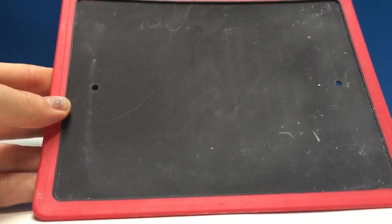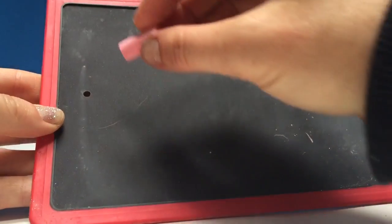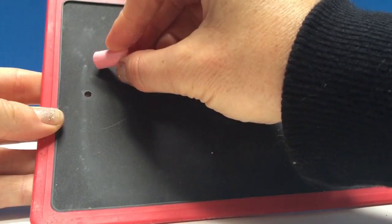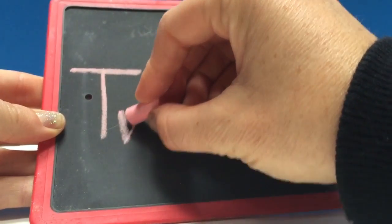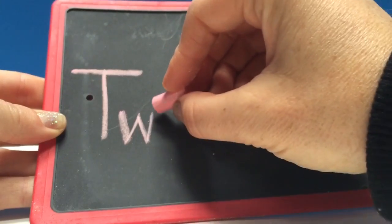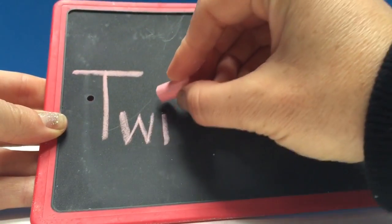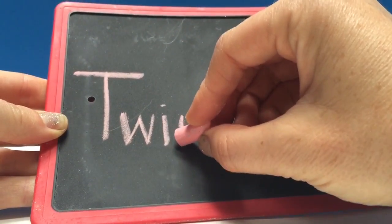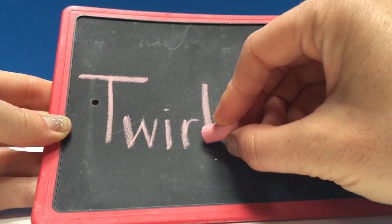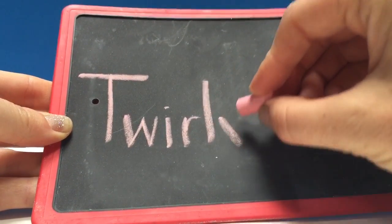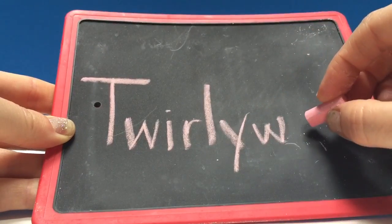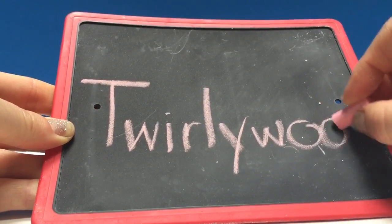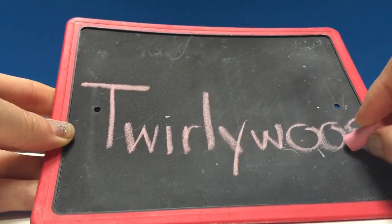We're going to write the word Twirly Woos and it starts with the letter T. So we're going to do a big T and then a W, W-I-R-L-Y-W-O-O-S.